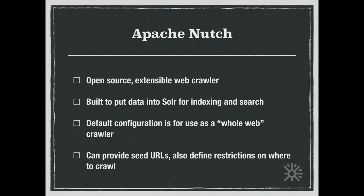The piece we added to provide federated search was Apache Nutch, because we needed something that could crawl all of these sites, not all of which were dynamic. Apache Nutch is a crawler designed to plug into Solr. It doesn't do the true indexing — it scrapes content from websites and pushes that into Solr where it gets indexed. It comes pre-configured as a whole web crawler, but you can provide seed URLs and place restrictions on where it should and shouldn't go.